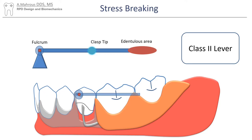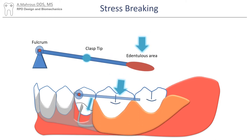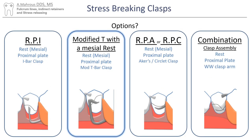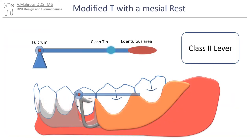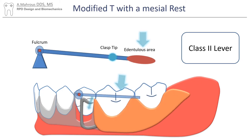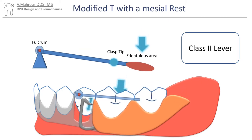In physics, they call this arrangement a Class 2 lever. In this arrangement with the RPI clasp assembly, you can see the I-bar clasp moving in the same direction as the edentulous space, thereby disengaging from the undercut and not causing stresses on the abutment tooth. A clasp assembly with a modified T clasp and a mesial rest works in a very similar fashion. Compared to the I-bar, the modified T clasp tip is located further distally on the tooth, which is still a stress-breaking Class 2 lever.